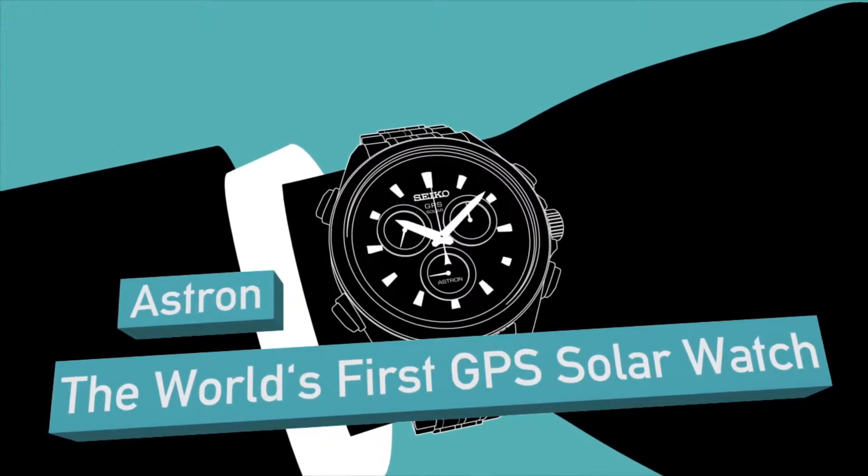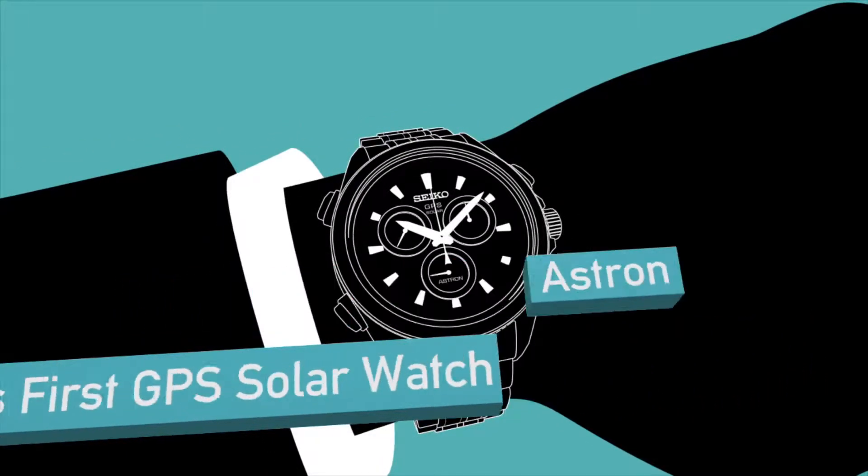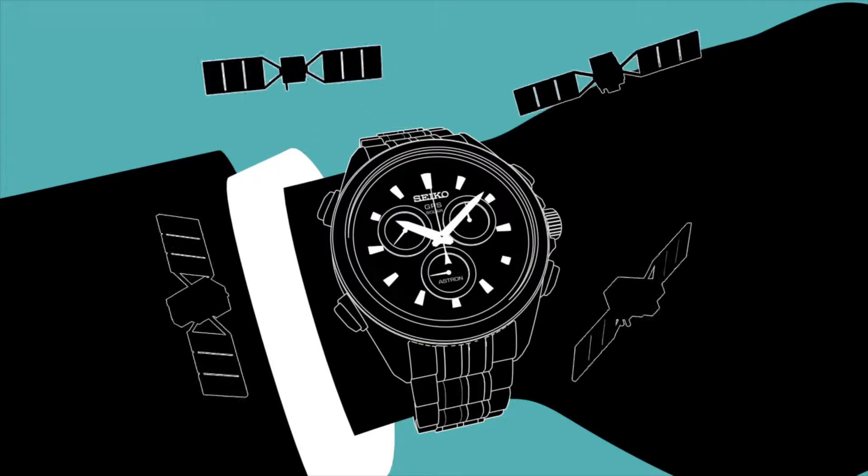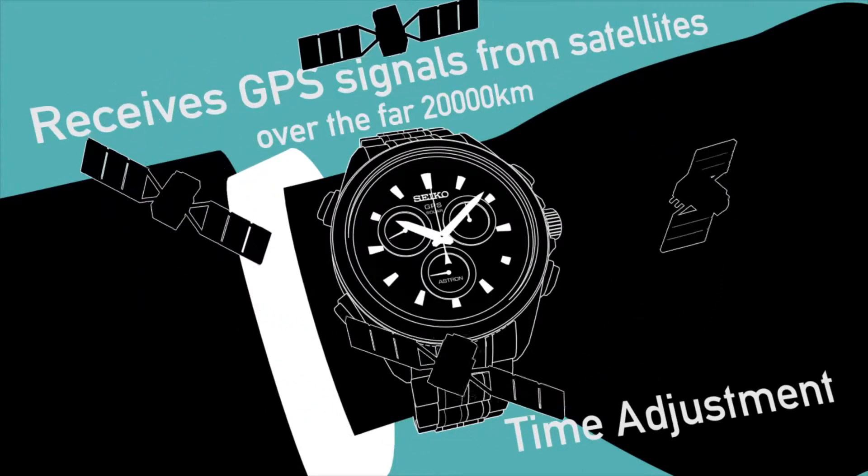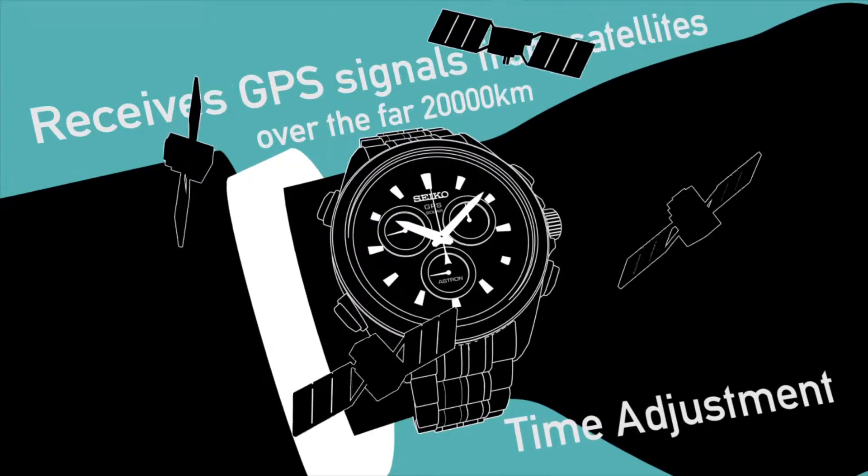ASTRON is the world's first GPS solar watch. ASTRON receives signals from the global network of GPS satellites and adjusts to your time zone and gives you the correct time.